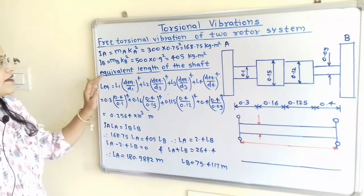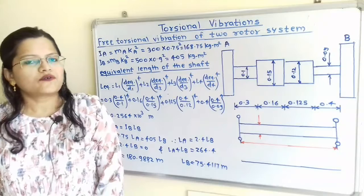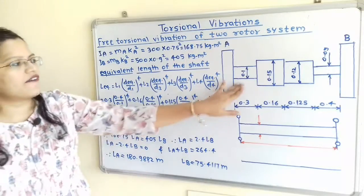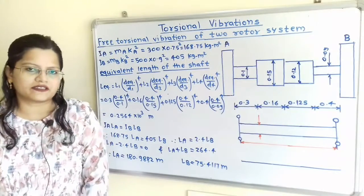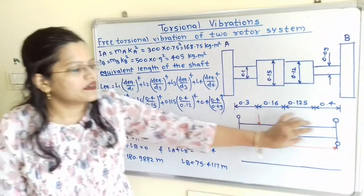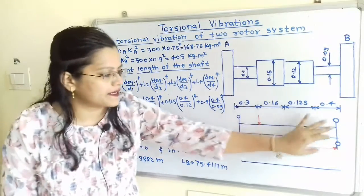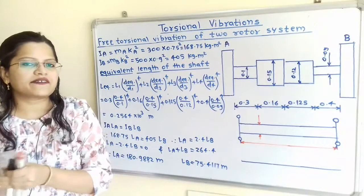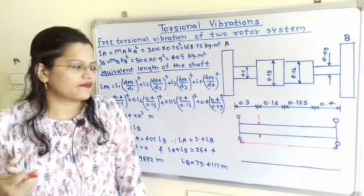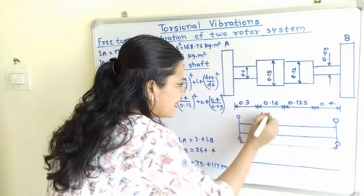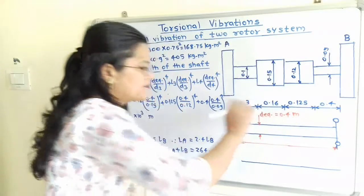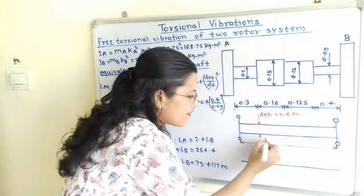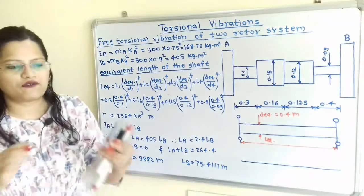Now we will move to calculate the equivalent length of the shaft. We have to first draw the torsionally equivalent shaft because the shaft has different diameters and different lengths. We will draw one shaft with uniform diameter and some particular length. This uniform diameter, D_equivalent, we have to assume a particular value. I will take D_equivalent = 0.4 m. For this D_equivalent of 0.4 m, the equivalent length L_equivalent is what we need to find out.